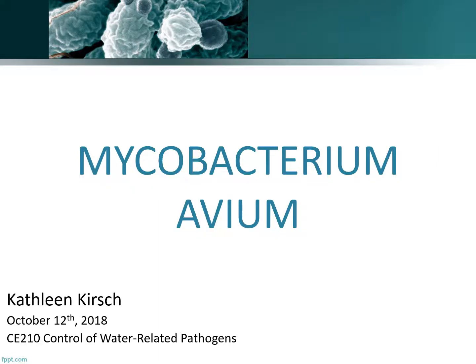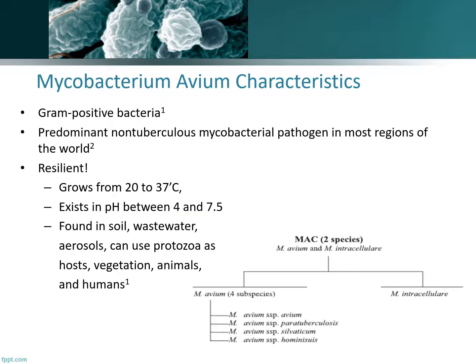Hello! Today we are talking about Mycobacterium avium, also known as MAC. This is a gram-positive bacteria and it is the predominant non-tuberculous mycobacterial pathogen found worldwide. There are two subspecies we're going to be focusing on today: MAA, the subspecies avium, and the other is paratuberculosis, also called MAP. These are the two that cause the primary health issues both in humans and animals.